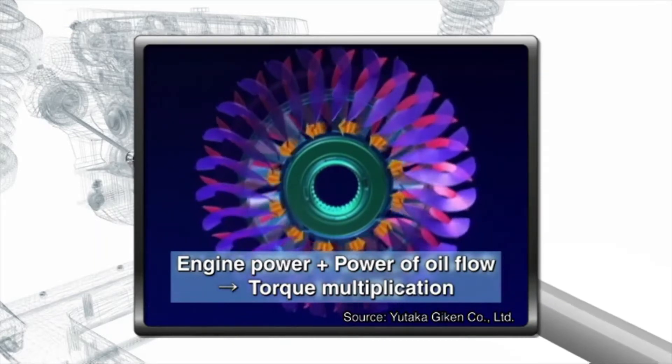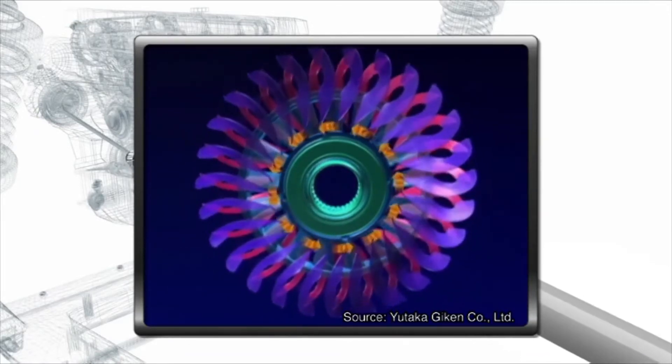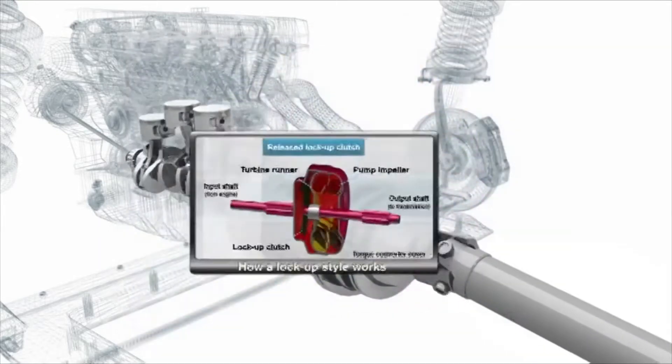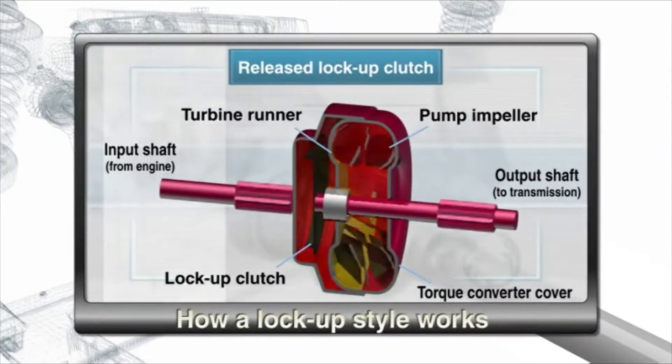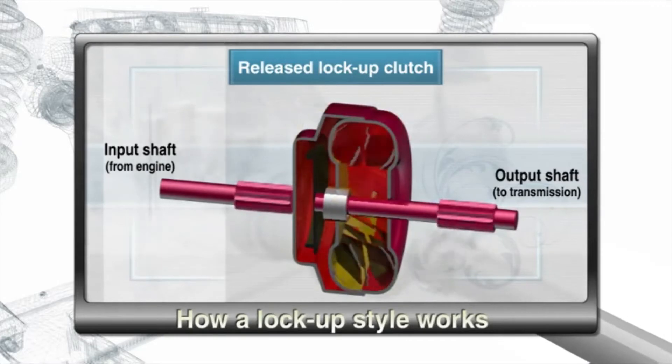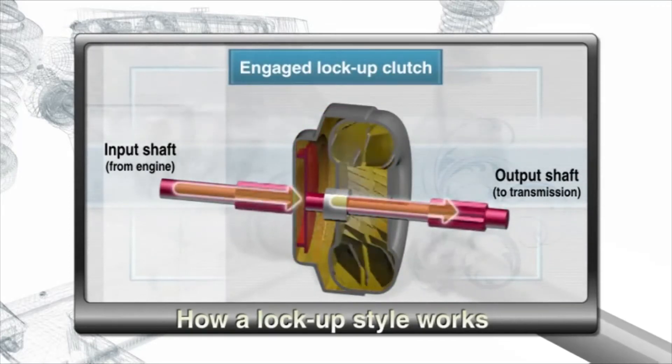However, because the pump impeller and the turbine runner are not physically linked, it is not possible to achieve 100% efficiency. The lockup style is designed to compensate for this inefficiency. When torque conversion is not needed, the input and output shafts are physically linked by a lockup clutch, allowing the engine to continue producing power without slippage.